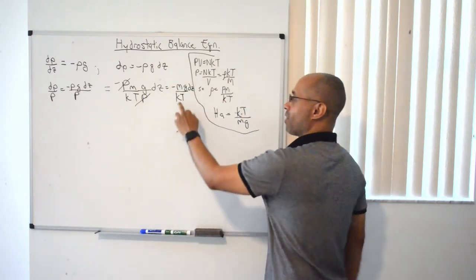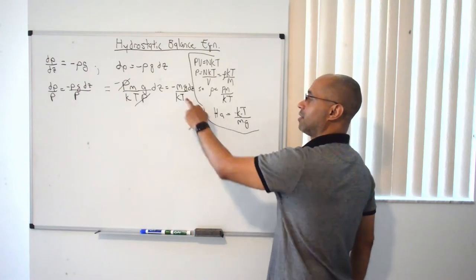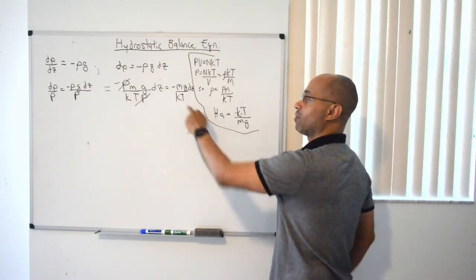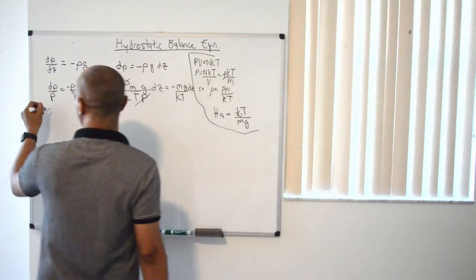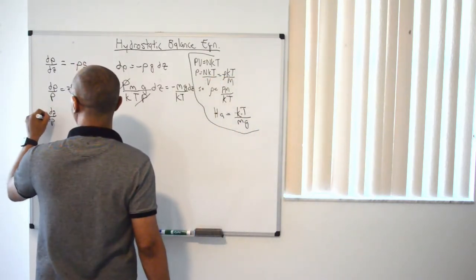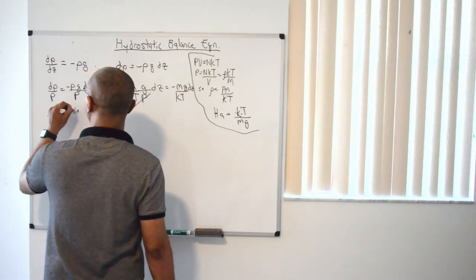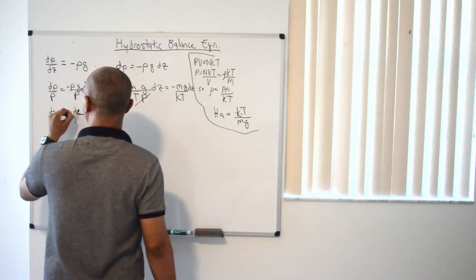And you're left with negative mg over kt dz. And you can see right away that this is the same thing as 1 over hA, or 1 over the scale height is what we've derived here. So we can simplify this again. It's equal to negative dz over hA.